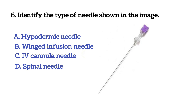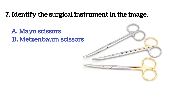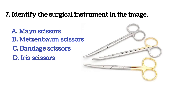Next question: identify the type of needle shown in the image. Option A: hypodermic needle. Option B: winged infusion needle. Option C: IV cannula needle. Option D: spinal needle. The answer is D, spinal needle.